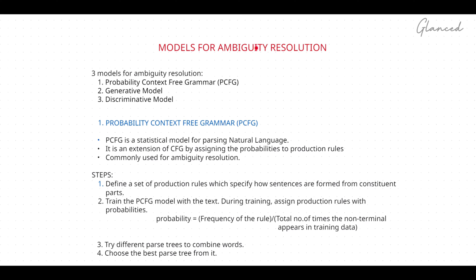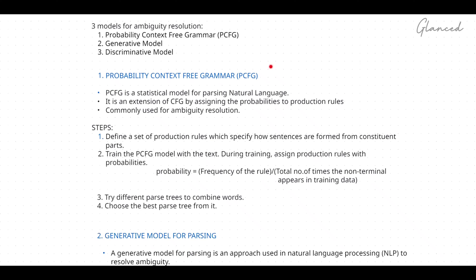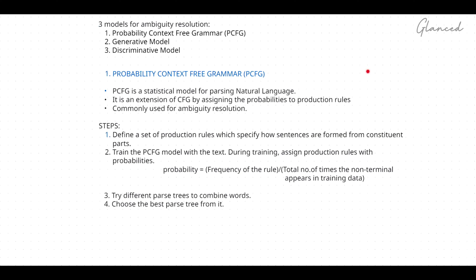Ambiguity means that you will be having the same word but with different meanings. In order to resolve this ambiguity in a particular sentence, you will be having three models. The first one is PCFG, that stands for Probabilistic Context-Free Grammar. The other is the generative model and the third is the discriminative model. In this video we are going to discuss about PCFG, and in other videos we will discuss generative and discriminative models.